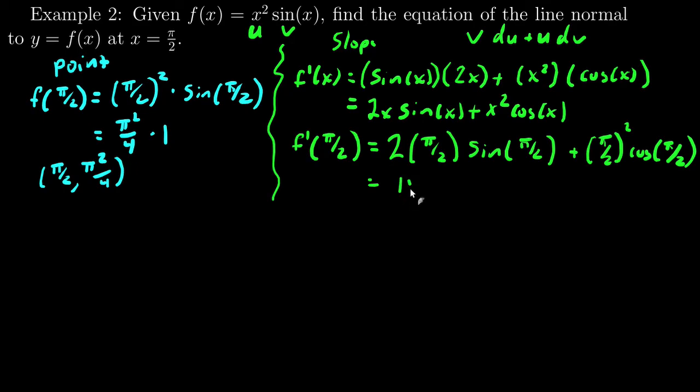And, in here, 2 times π/2 is π. Sine of π/2 is 1. (π/2)^2 is π^2/4. And, the cosine of π/2 is 0. So, my tangent slope will be π.